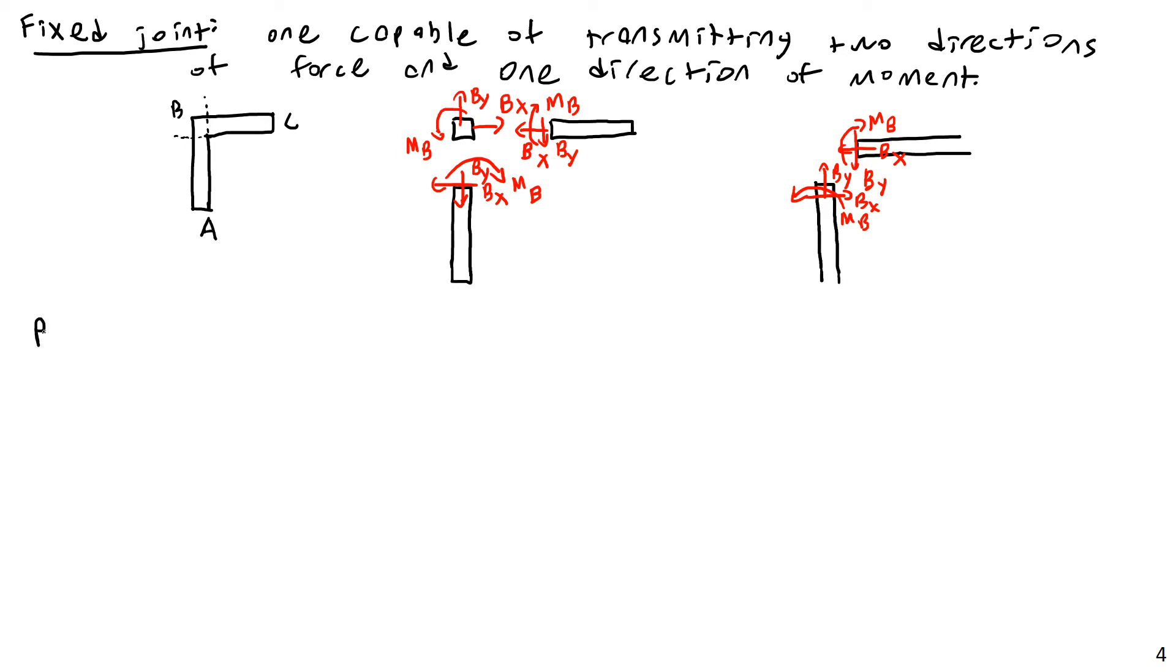And so then the pin joint, very similar to pin supports, is going to transmit a force in two directions but no moment. So if you have a member, and there's really only one good way to analyze these, let's say you have a pin here and another member coming in here.